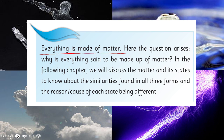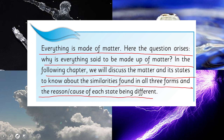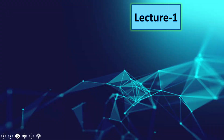Everything is made of matter. The question arises: why is everything said to be made up of matter? In this chapter we will discuss matter and its states, and we will explore the similarities found in all three forms and the reasons each state is different. We have already studied in previous classes that every thing is made of matter. In this chapter we will learn why and how matter is found in different states, and the similarities and differences between them.